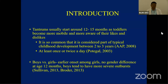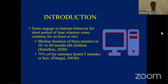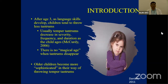Regarding boys versus girls: the onset among girls is a bit earlier compared to boys, but there is no gender difference at 12 months. As children progress, tantrums occur earlier in girls, but severity is greater among boys. Some engage in tantrum behavior for a short period, while others continue for an hour or two. The median duration is about 3 minutes in children aged 18 to 60 months. 75% of tantrums usually last less than 5 minutes. After age 3, as language skills develop, children tend to throw fewer tantrums, with tantrums decreasing in severity, frequency, and duration.